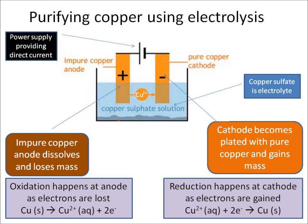The anode is made out of impure copper and that's going to dissolve and it's going to lose mass. The cathode becomes plated with pure copper and that's going to gain mass. What happens at the anode is that it releases copper ions and loses electrons. What happens at the cathode is that electrons are gained and new copper metal is deposited around the cathode.